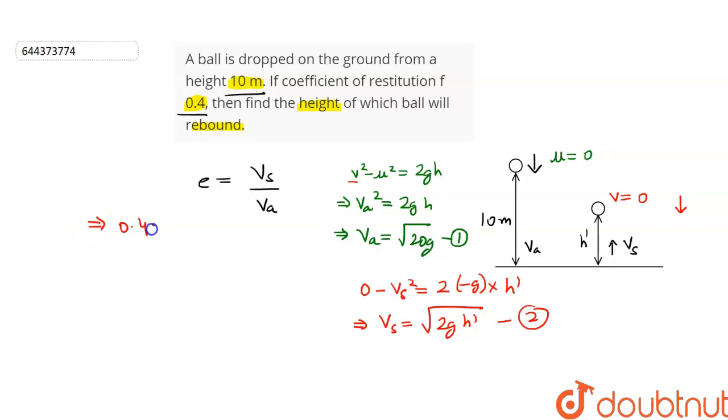So, this can be written as 0.4 is equal to under root of 2GH dash upon under root of 20G. Under root G will get cancelled and let's square on both the sides. This will give us 0.16 is equal to 2H dash upon under root of 20G and after simplifying, we get H dash is equal to 1.6 meters. So, the height up to which the ball will rebound will be 1.6 meters.